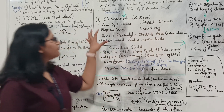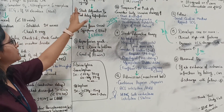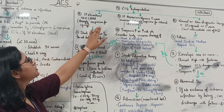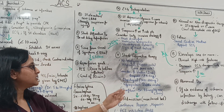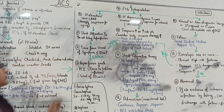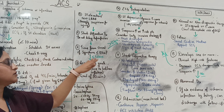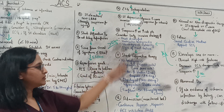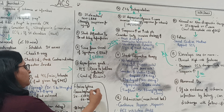For ECG interpretation: if ST elevation or new LBBB is seen and strongly suspicious for injury, start adjunctive therapies including nitroglycerin and heparin, and do not delay reperfusion. If onset of symptoms is within 12 hours, proceed with reperfusion goals such as PCI. If more than 12 hours, consider fibrinolytics after checking the fibrinolysis checklist.